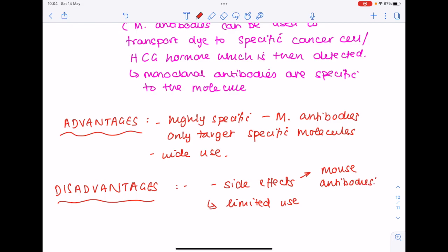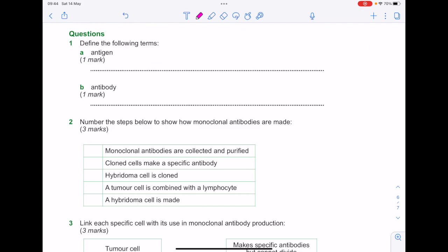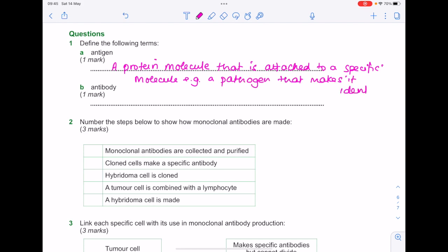Right, now let's look at some past paper questions. First of all, let's define the following terms. An antigen is a protein molecule that is attached to a specific molecule, e.g. a pathogen, that makes it identifiable. I could have written that shorter but I think that's the clearest way of understanding exactly what an antigen is. So what is an antibody? Well it's another protein but it's produced by the lymphocyte white blood cell, often used to kill pathogens.